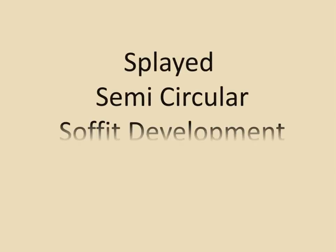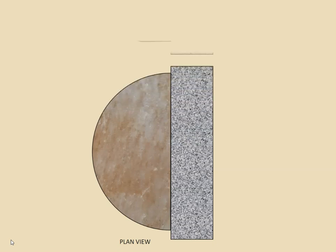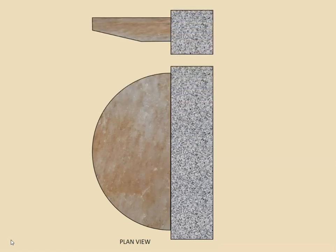Okay everyone, this is an exercise which involves developing a circular soffit, but the circular soffit has a splay on it. In other words, it's not on a horizontal plane.